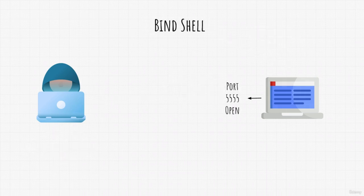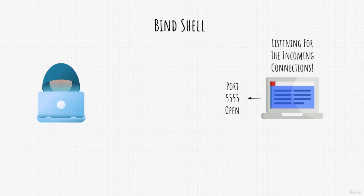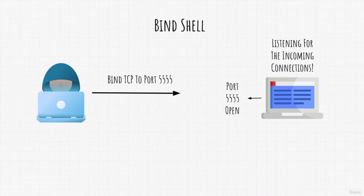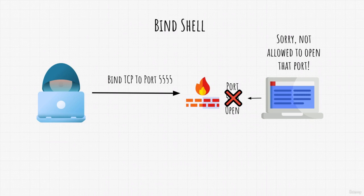On the other hand, a bind shell is when the target machine opens their port for us to connect to. In this case, it is the target machine that is listening for the incoming connection on that port, and we are the ones that must connect to that port. After we do it, we can control that target machine. However, there is one problem with bind shell, and it is one of the main reasons why we won't use it that much — a firewall can forbid the target machine from opening a port. Many firewalls have a rule that says don't open any random port for security reasons. Therefore, our bind shell would not work even after exploiting the target.